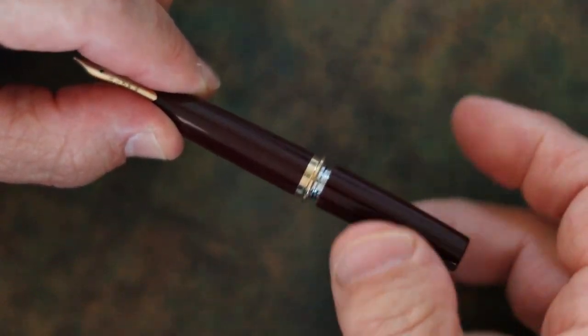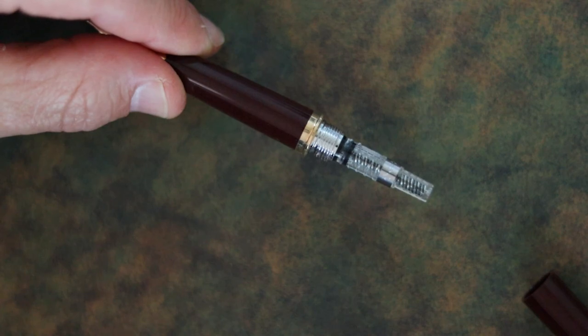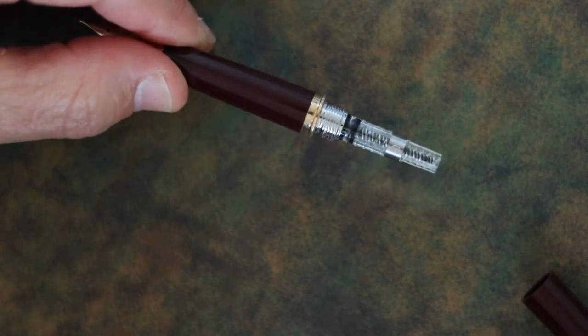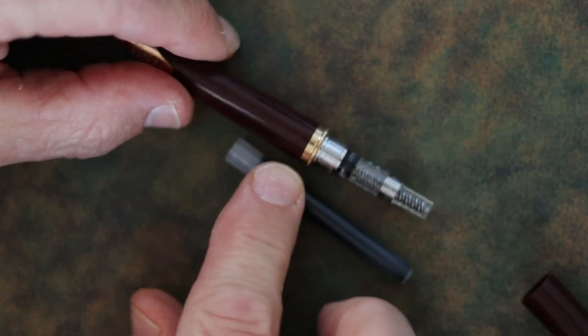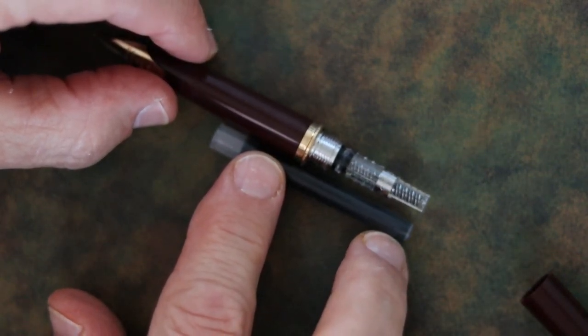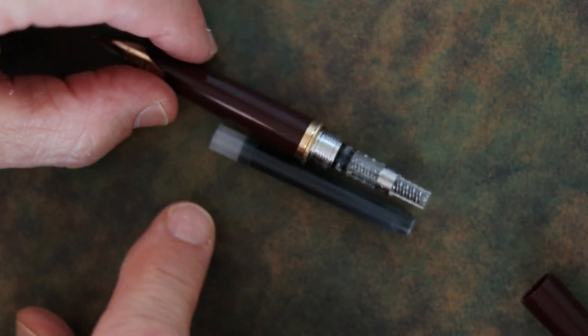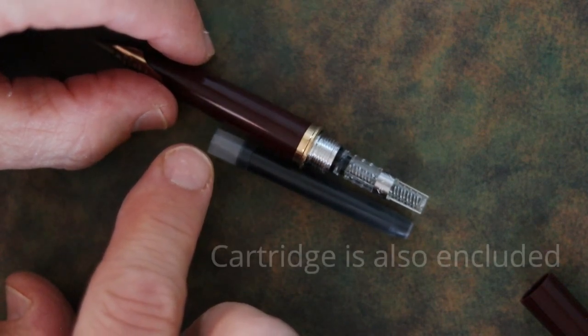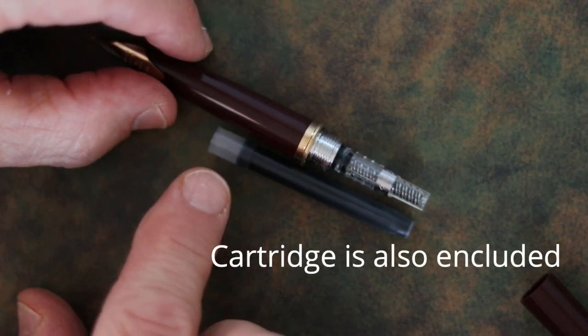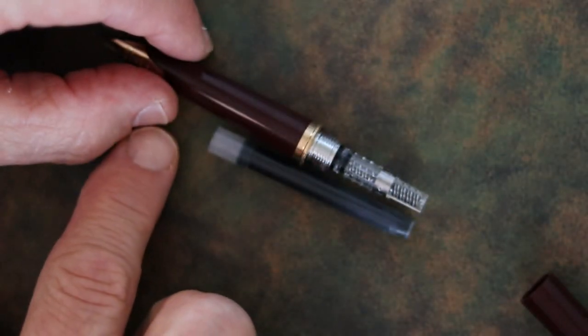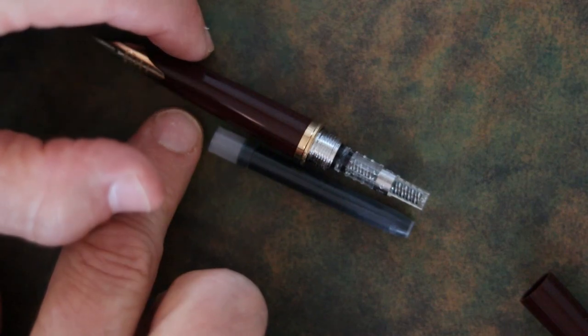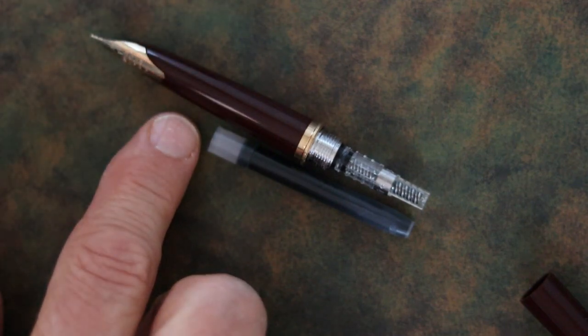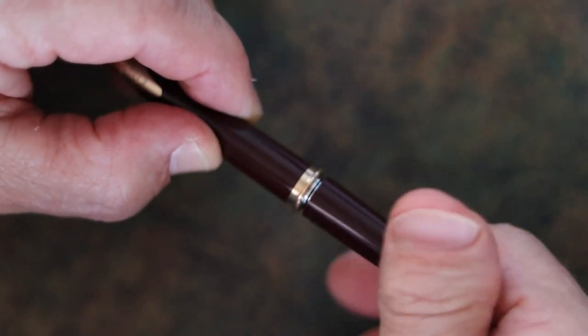Open the pen up, and it reveals the CON40 that does come with the pen. Now, it will also take the pilot cartridges. And as you can see, these sit fairly deep within the pen there. So screw that back on there. Now, this is a metal thread on plastic thread.